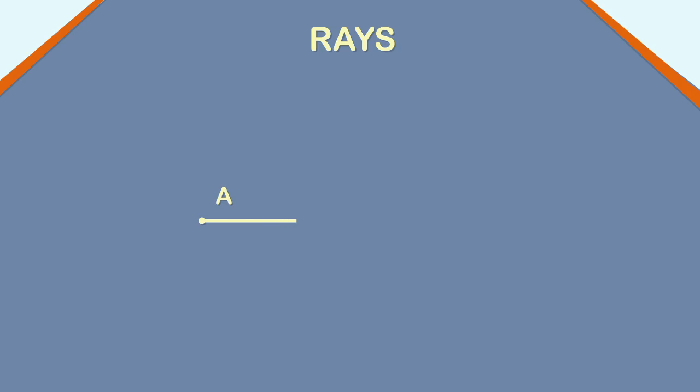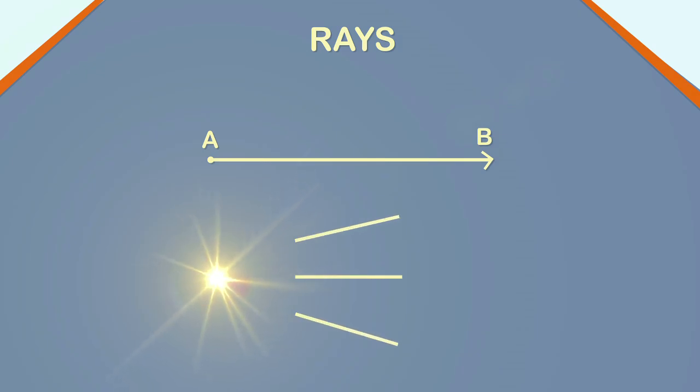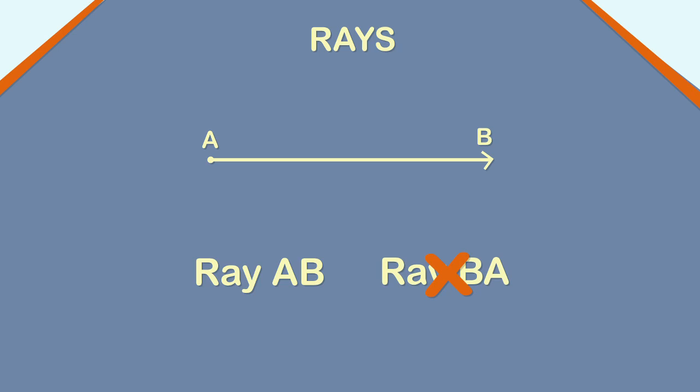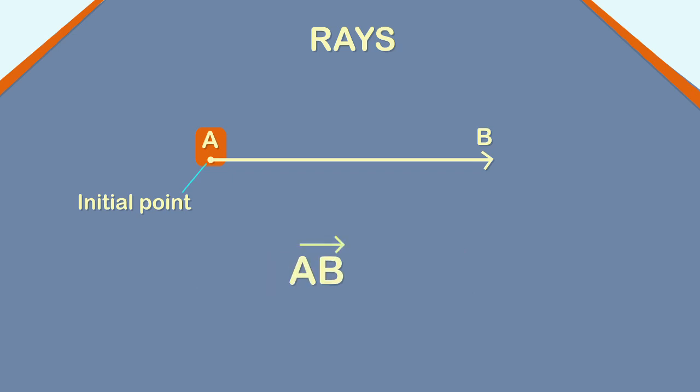A line segment which extends endlessly in one direction is called a ray. Have you noticed the rays of the sun? They start from the light source which is the sun and go on endlessly in one direction. A ray has only one end point and does not have a fixed length. Hence, it cannot be measured. The above ray can be read as ray AB. It cannot be read as ray BA. The first letter should be the end point letter. It is called its initial point. It can be written as ray AB.